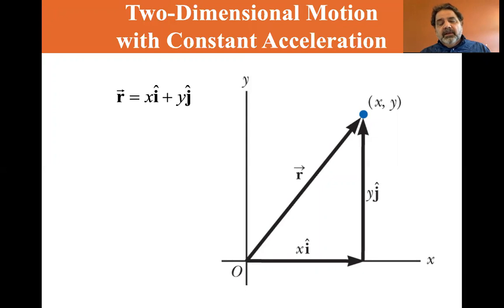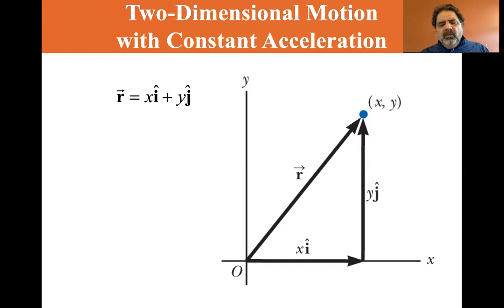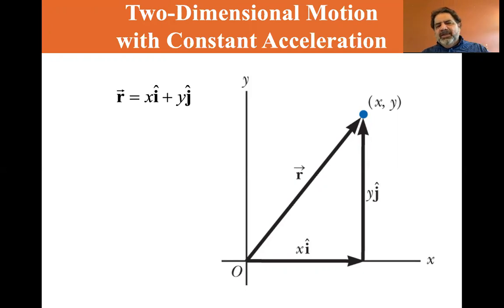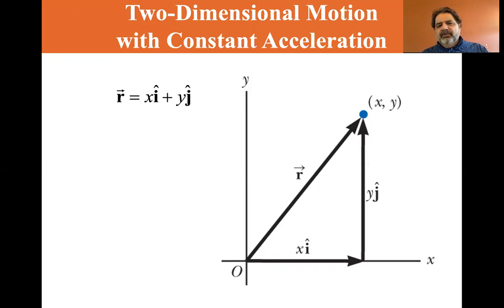x is a scalar, i is a vector, so it's just scalar-vector multiplication. And y is a scalar and j is a vector, so it's yj — scalar-vector multiplication. But don't just add the x and the y; you have to do it vectorially to get r. We've discussed that in the last chapter.